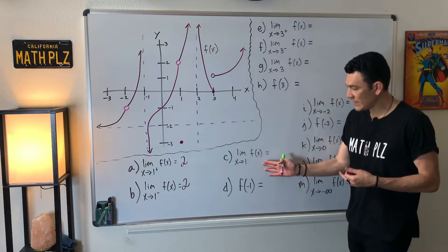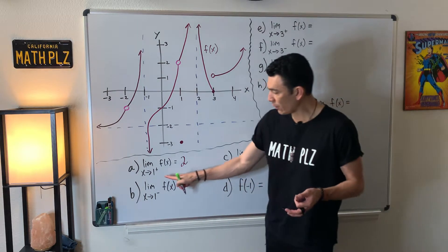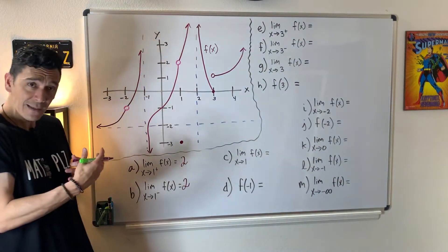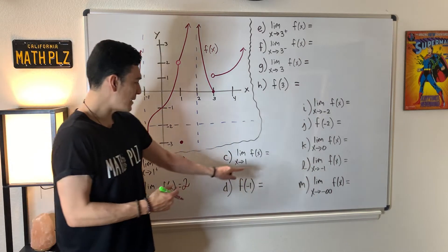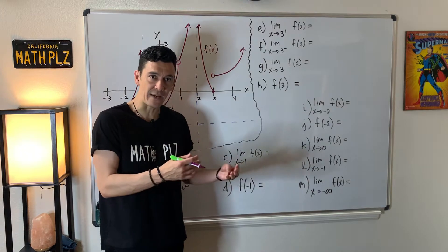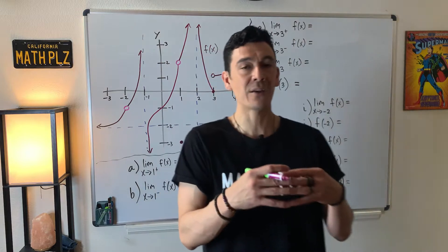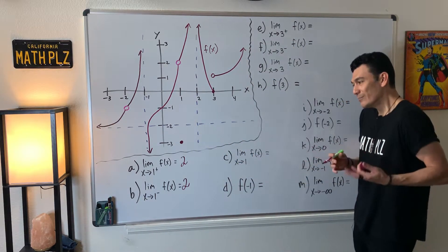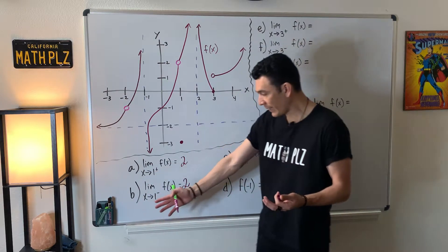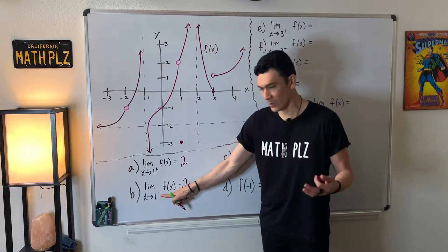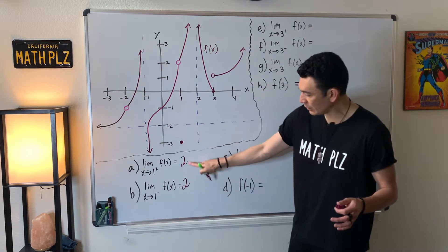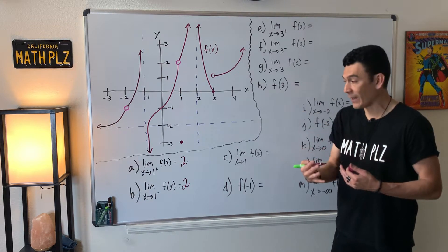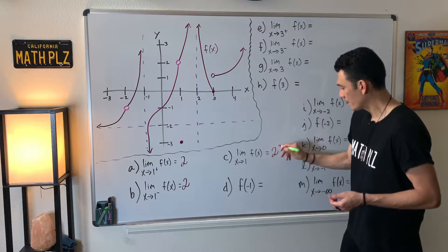Now for part C, we're approaching the number one with no direction specified. Anytime they don't specify a direction — right or left — you have to do both. We already did that in the first two parts: we approached one from the right, then from the left. In both cases the conclusion was the same number, two. So for part C the answer is two.